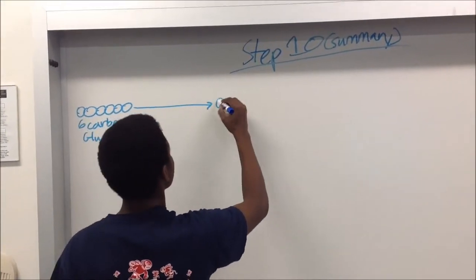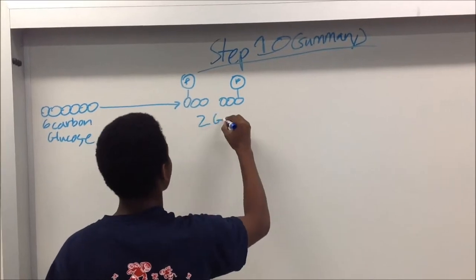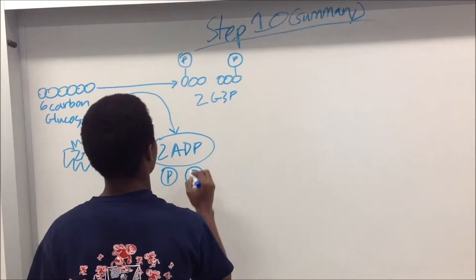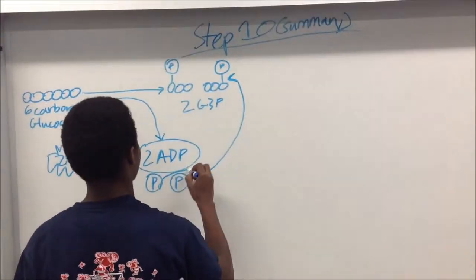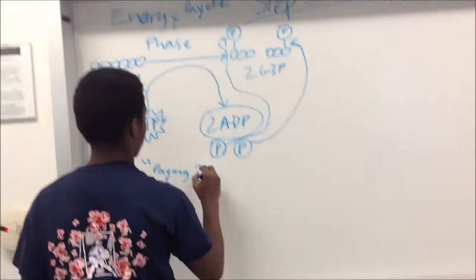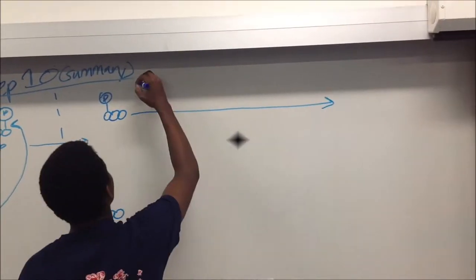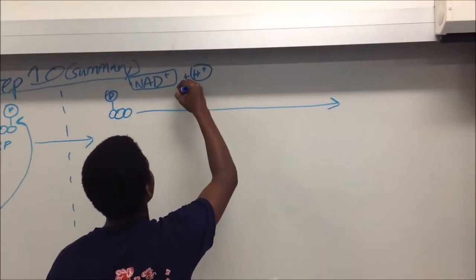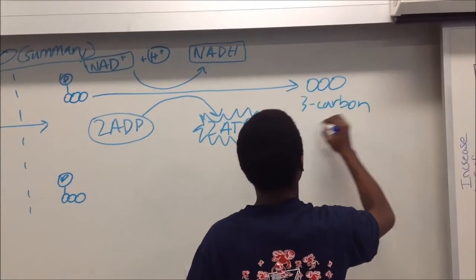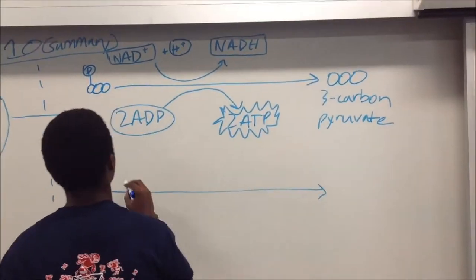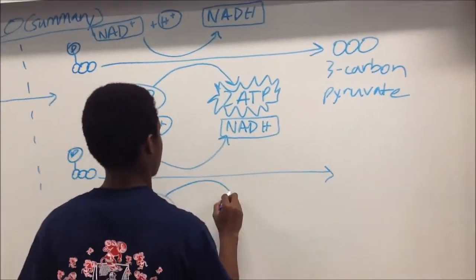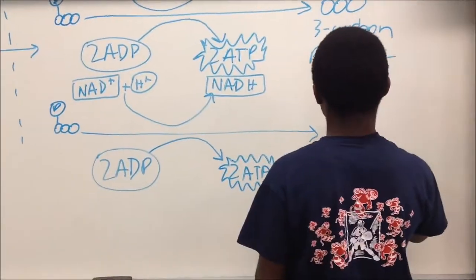Overall, two ATP are invested to make the phosphate groups bond to the glucose, forming a 6-carbon diphosphate molecule, which then splits into two G3P molecules. NAD-plus comes in to accept the H-plus ion to form NADH. Two are produced in total. Then two ATP on each G3P produce four ATP molecules.